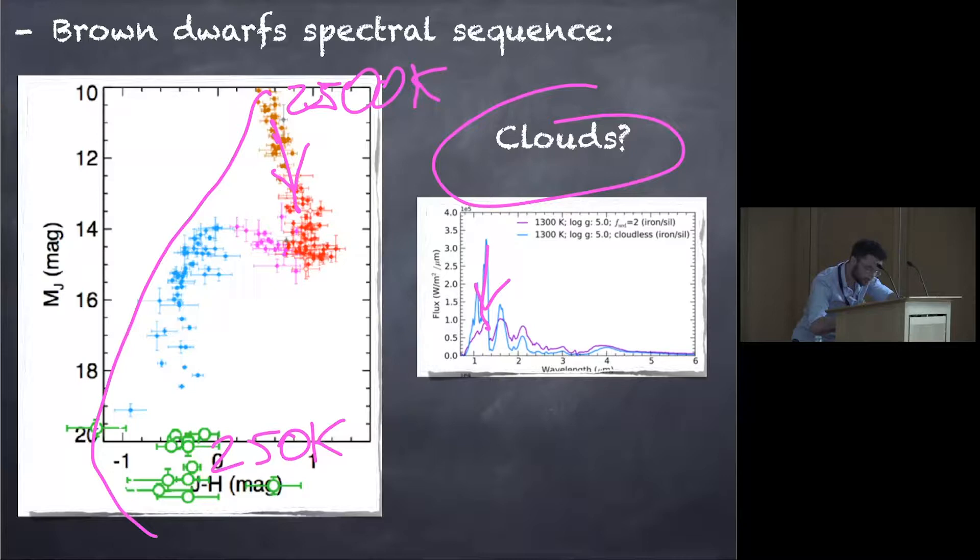And traditionally, what has been used is clouds. When you introduce clouds, you're blocking the flux in the wavelength J-band, and you can go on the color magnitude diagram in that direction. Then at some point, you need the clouds to be removed, so that you go back here, and then you still need other type of clouds when you go down.